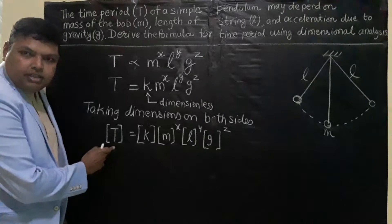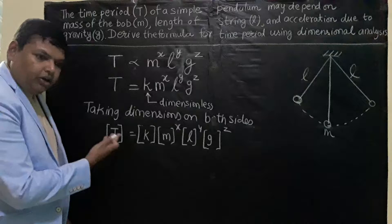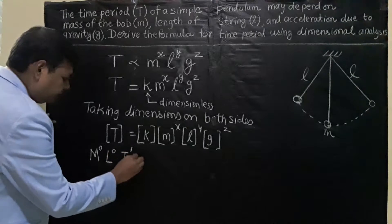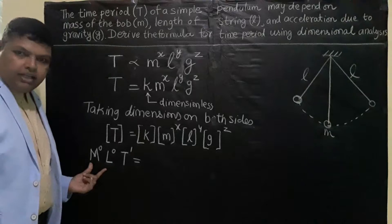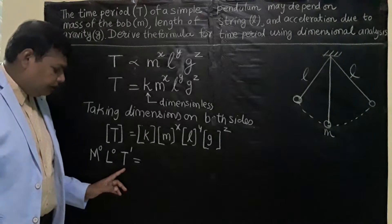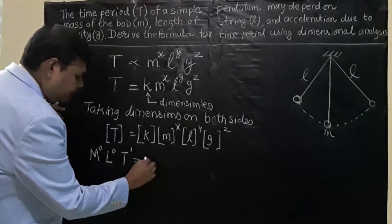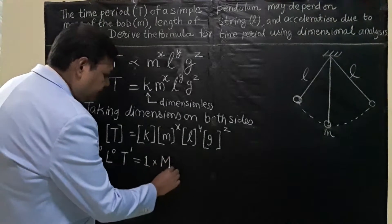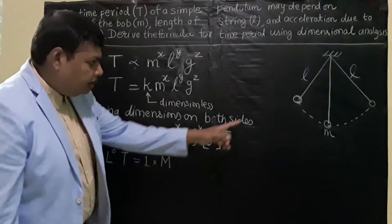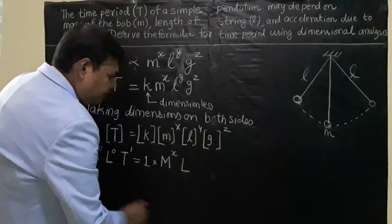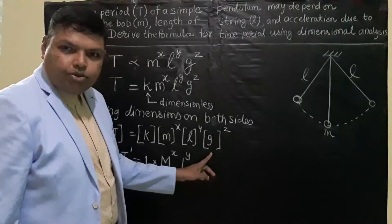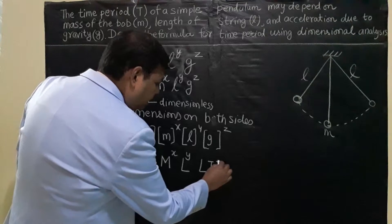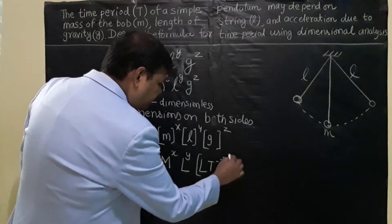The time period T is simply time, so its dimension is M⁰L⁰T¹. Since K is dimensionless, its dimension is 1. The dimension of mass is M, so that gives M^X. The dimension of length L gives L^Y. The acceleration due to gravity has dimensions LT⁻², so that gives [LT⁻²]^Z.